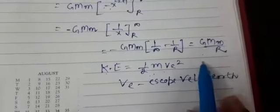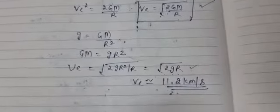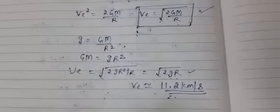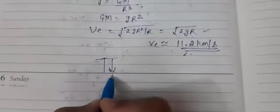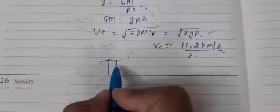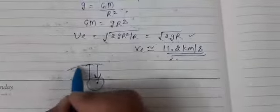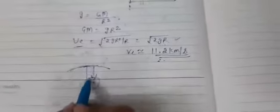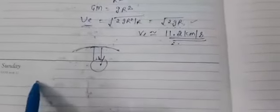There are two expressions for escape velocity — √(2GM/R) and √(2gR). Now, another important special case: if a body is projected with a velocity greater than escape velocity, it will escape earth's gravitational pull and move into interstellar space with some velocity V'.